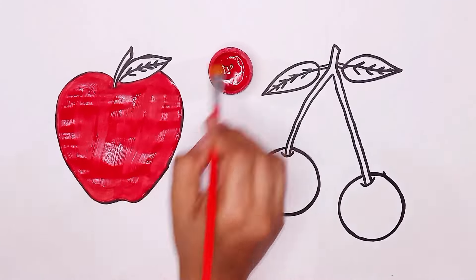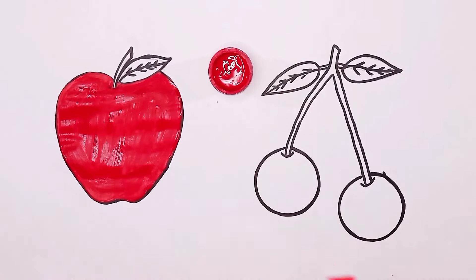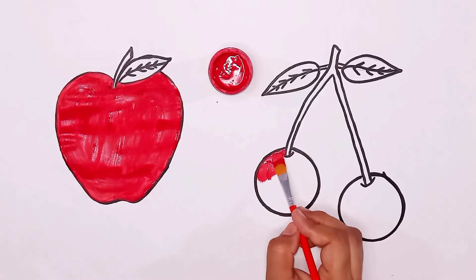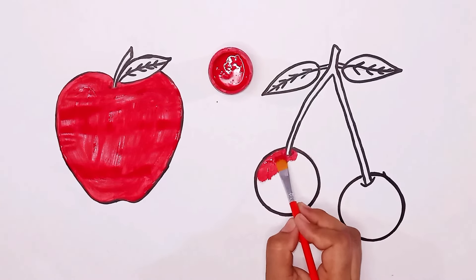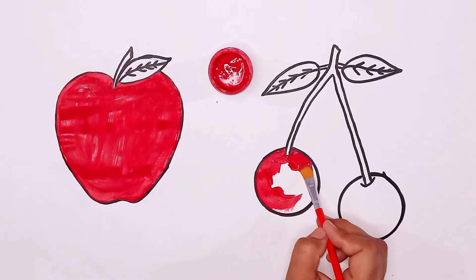Q is for queen, q-q-queen. R is for rabbit, r-r-rabbit. S is for sun, s-s-sun. T is for toad, t-t-toad.